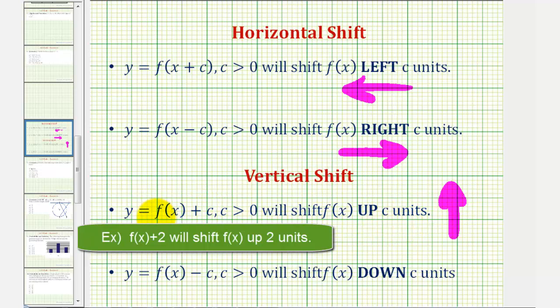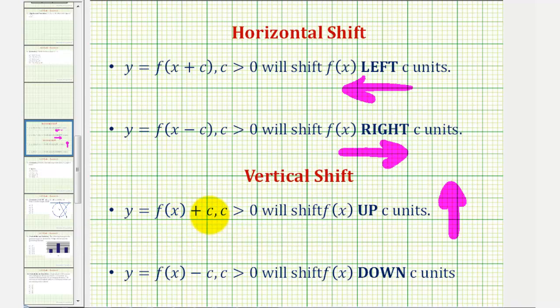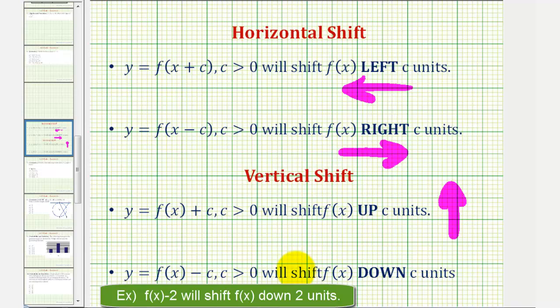Remember, f of x is equal to y, so we're adding a constant to the function value or y value, which shifts the graph up. And then if we have y equals f of x minus c, then the graph is shifted down.